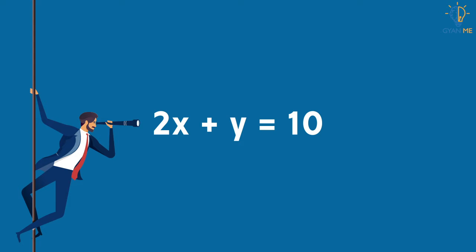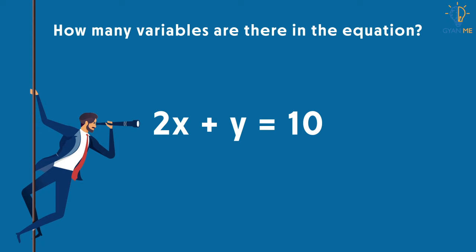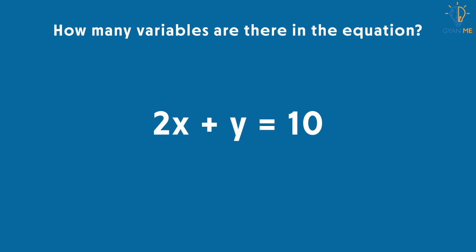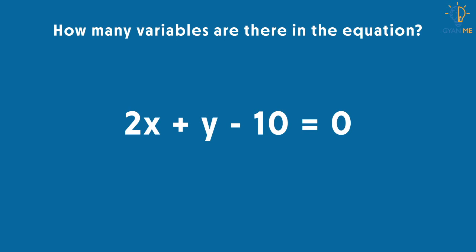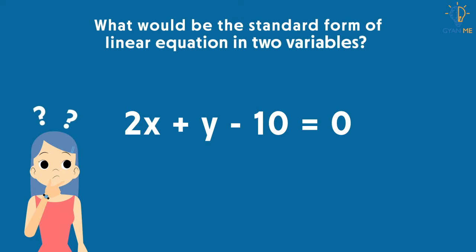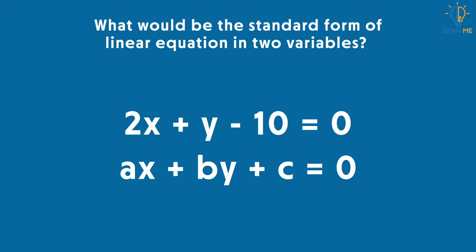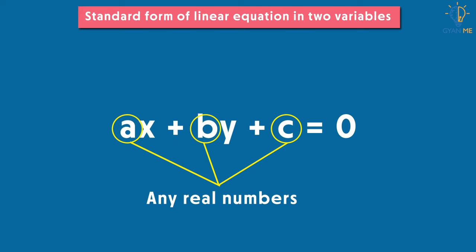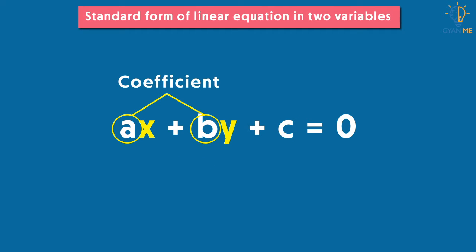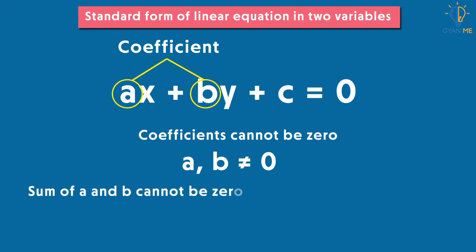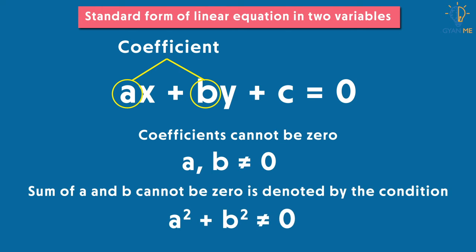Look at the equation carefully — there are two variables: X for cost of eraser and Y for cost of pencil. Rearranging, we write it as 2X plus Y minus 10 is equal to 0. The standard form of a linear equation in two variables is AX plus BY plus C equals 0, where A, B, and C are any real numbers. A and B are the coefficients of X and Y respectively, and they are not zero individually or together, expressed as A squared plus B squared is not equal to 0.